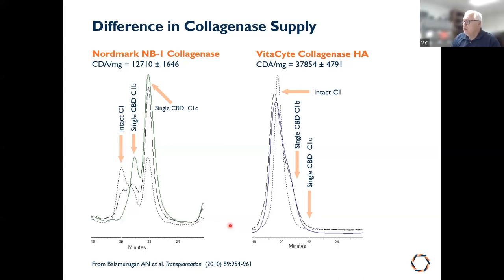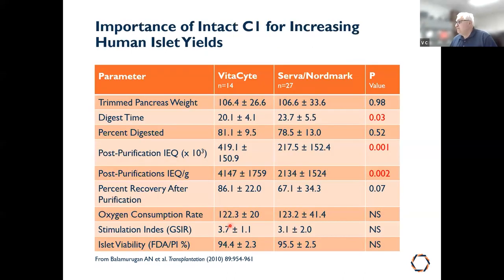The practical outcome: with intact collagenase, digest times were shorter, and islet equivalent yields post-purification — expressed as total islets or IEQ per gram of tissue — were significantly better.